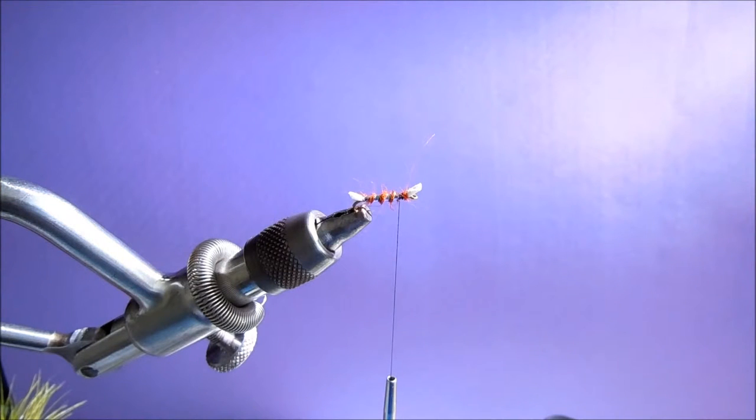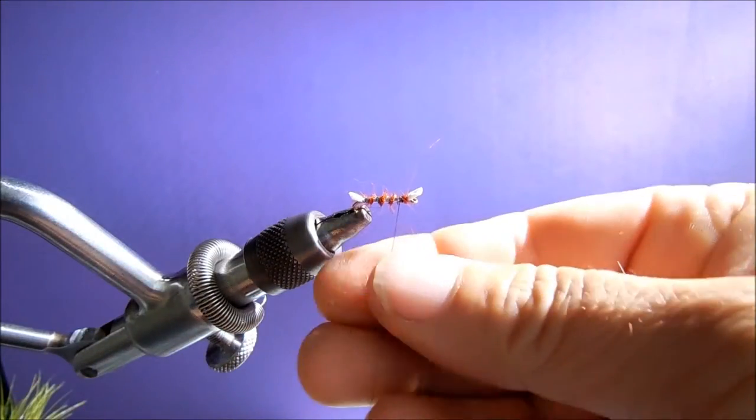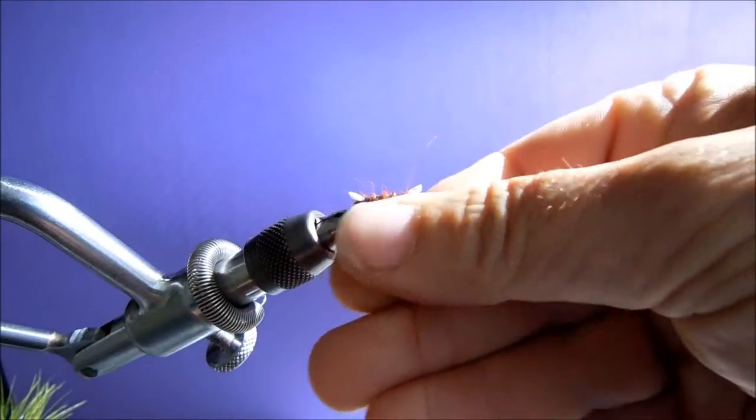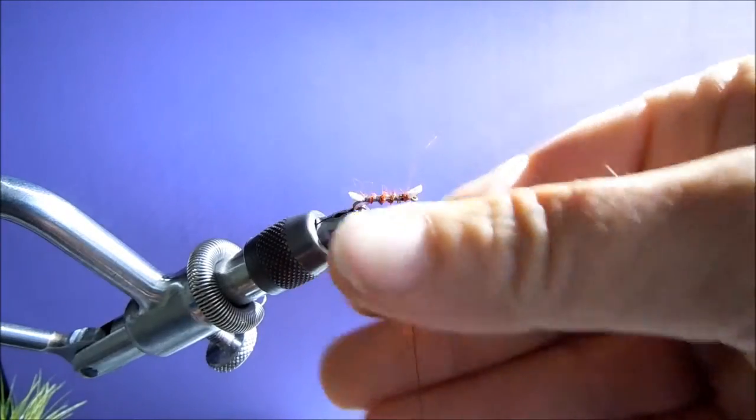I might just add a little bit more dubbing to build up that thorax, just a smidge. Just enough to give the appearance of an emerging insect.